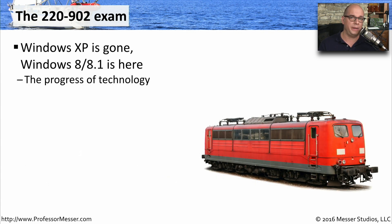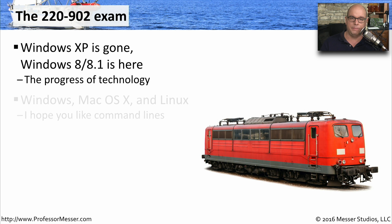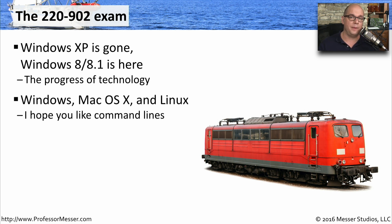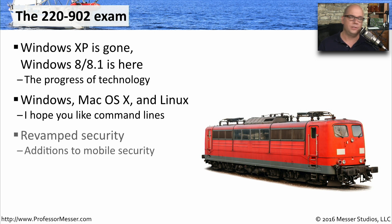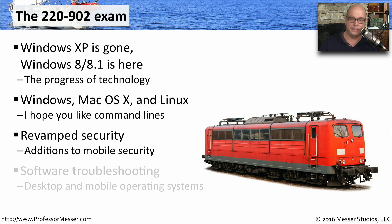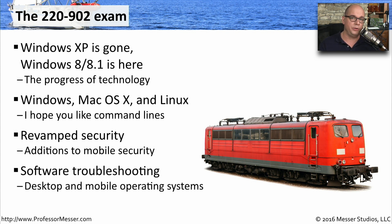The 220-902 exam has also been updated. Windows XP is no longer part of this second exam; instead it's been replaced with Windows 8 and Windows 8.1. CompTIA has also included additional operating systems beyond Windows — Linux and Mac OS are brand new to the CompTIA A+ certification, so you'll need to know a lot of detail about them. The security section has also been updated over the 802, including more details about securing mobile devices. And just like the 802, the 902 includes troubleshooting, but only covering topics from the 902 exam objectives.